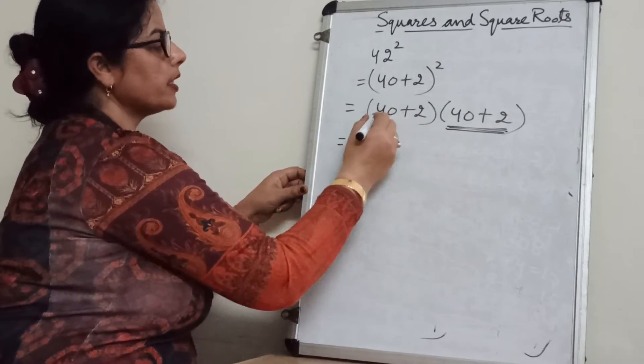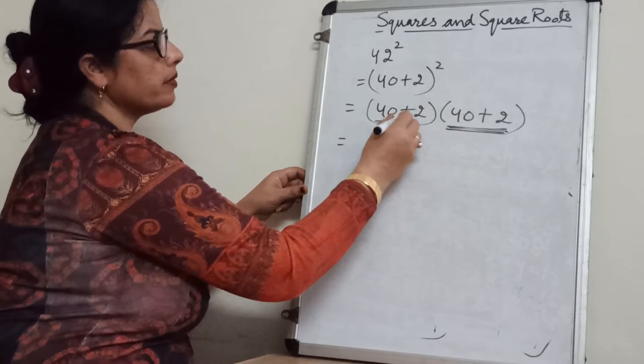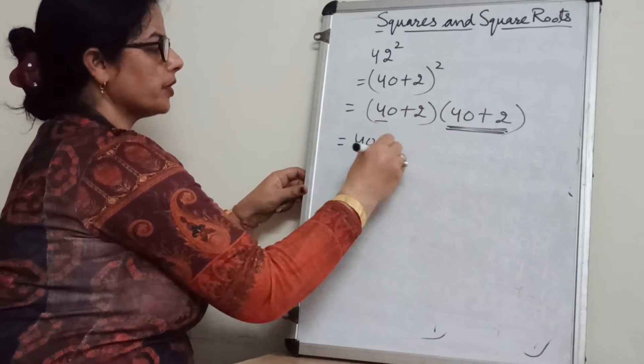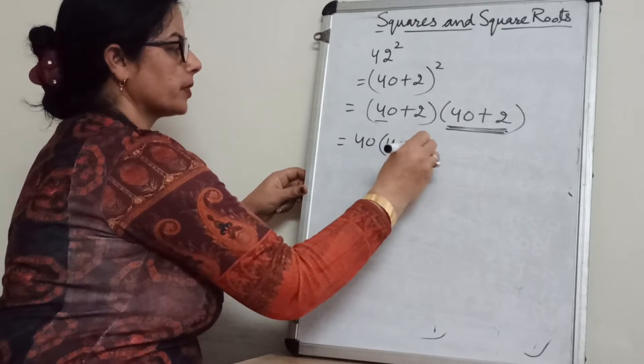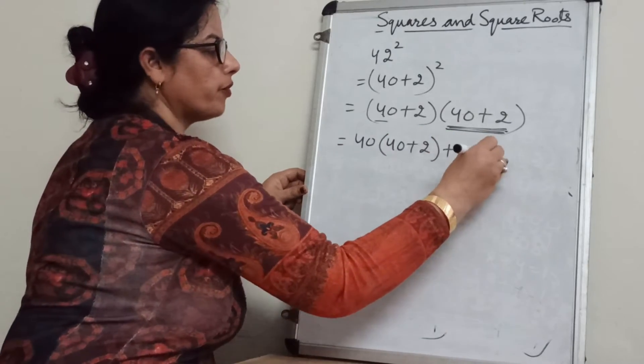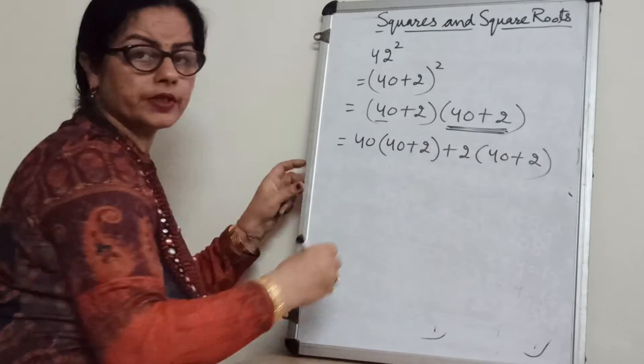Now keep this binomial fixed. First we will multiply 40 with this binomial. Then by 2. 40 into 40 plus 2. Then plus 2, 40 plus 2. Now open the bracket.